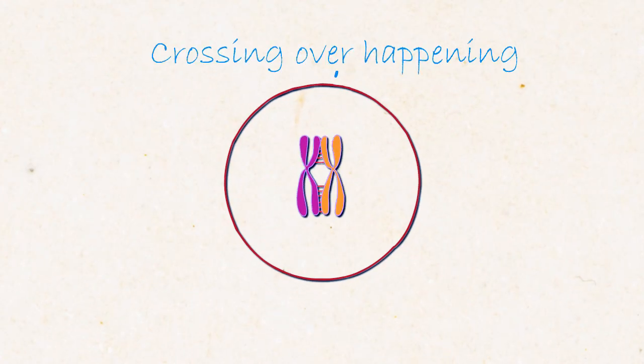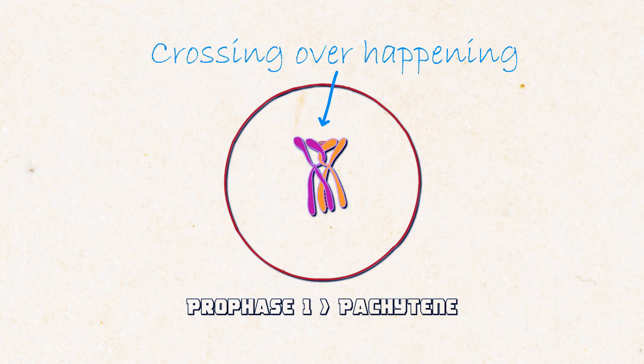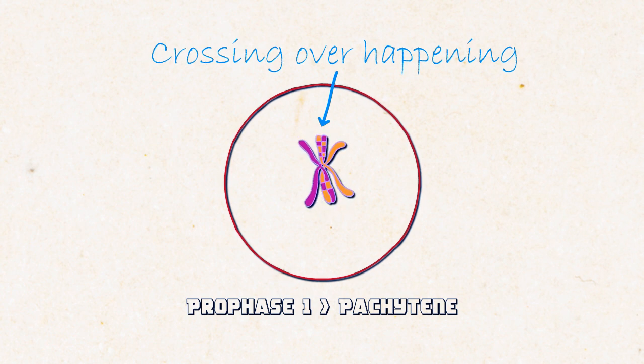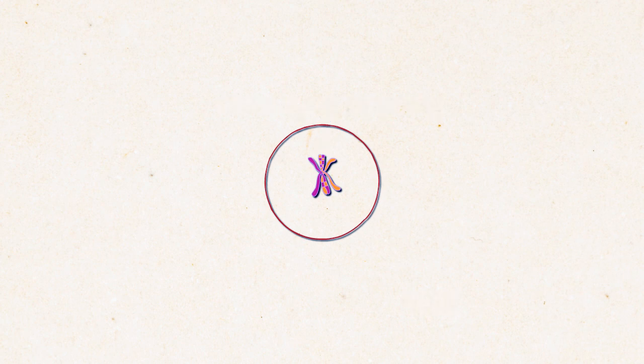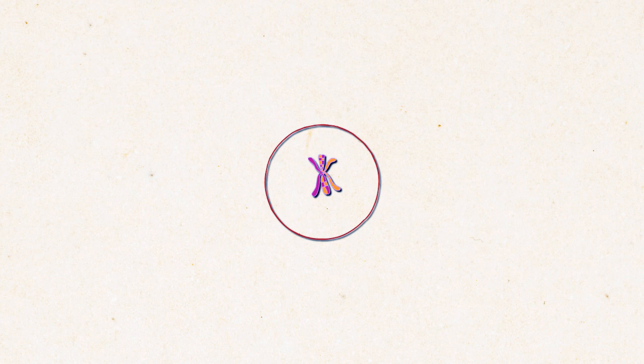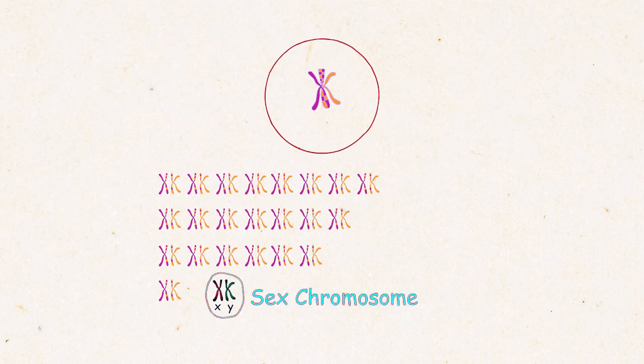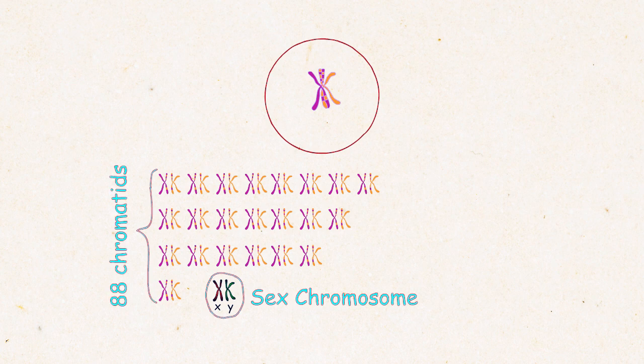Pachytene is probably the most fascinating stage of them all. Because in this stage crossing over happens. As the name suggests, genes cross one chromosome to another at this stage. And as a result we get non-identical chromatids. But remember this, crossing over only happens to the autosomes, not in the sex chromosomes. So what we get after the crossing over is 88 non-identical chromatids.